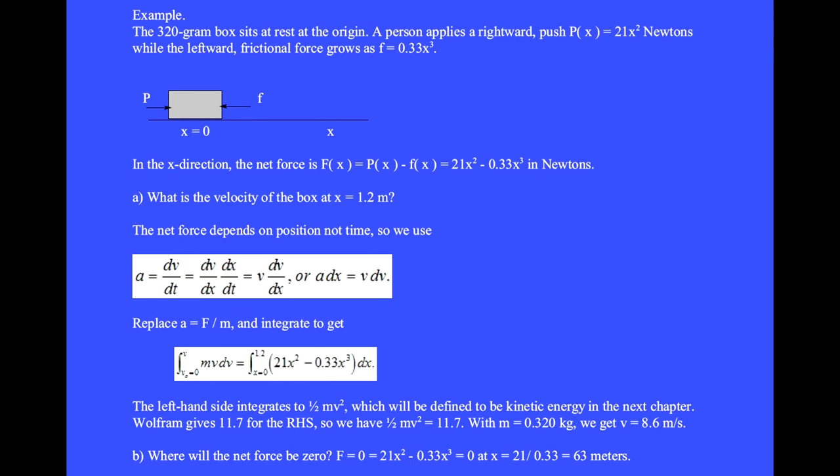The net force depends on position not time, so we convert a equals dv dt equals dv dx dx dt. But dx dt is a velocity v, so this pair is v dv dx. Moving the differential to the other side of the equals sign gives a dx equals v dv.